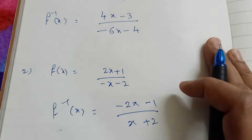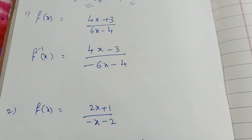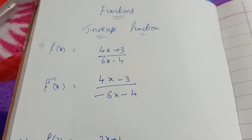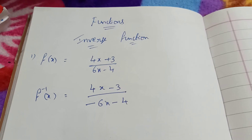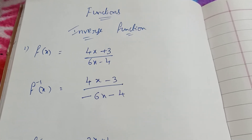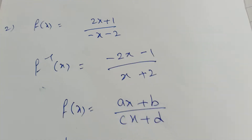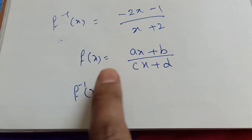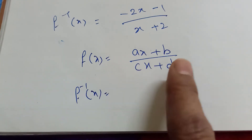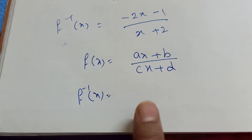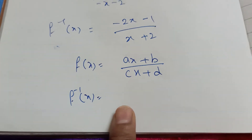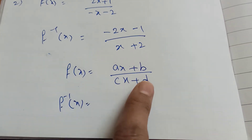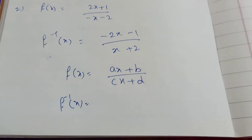Now, what is the formula? Listen here. f of x equals ax plus b by cx plus d. Here, a and d interchange their places.